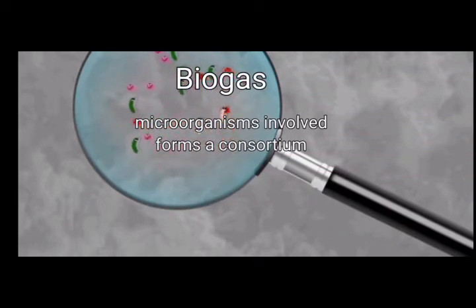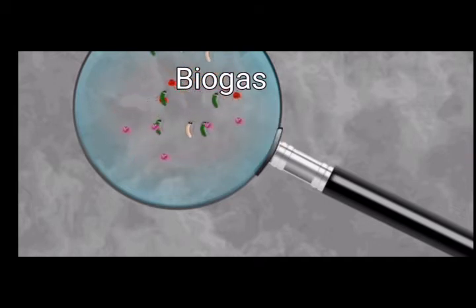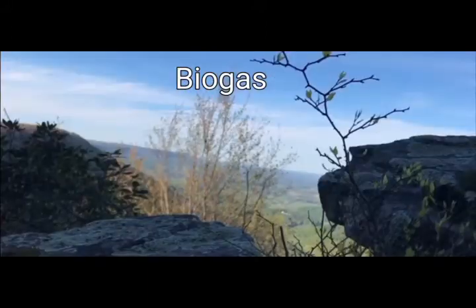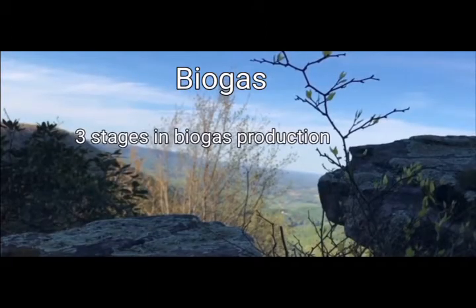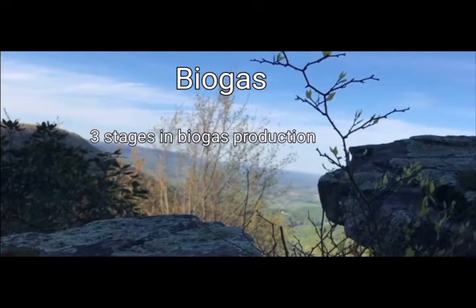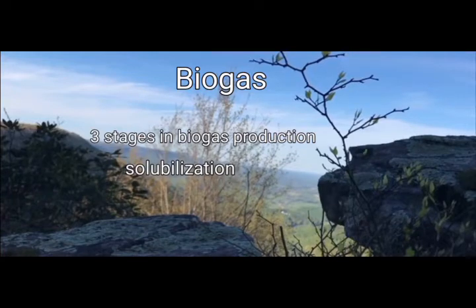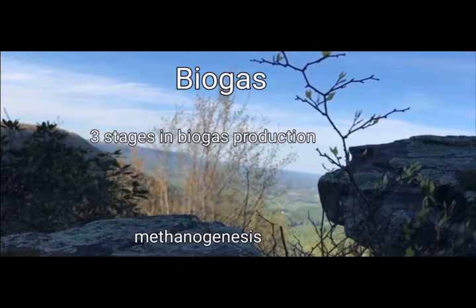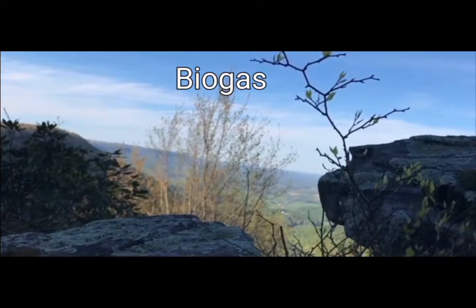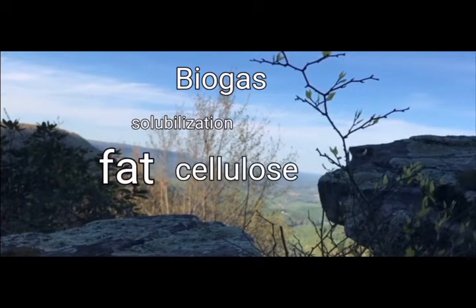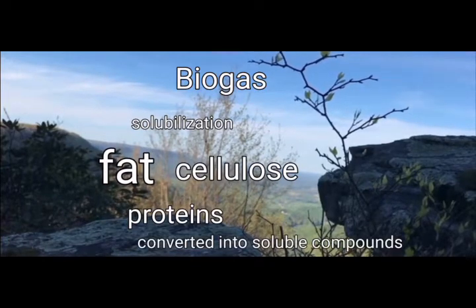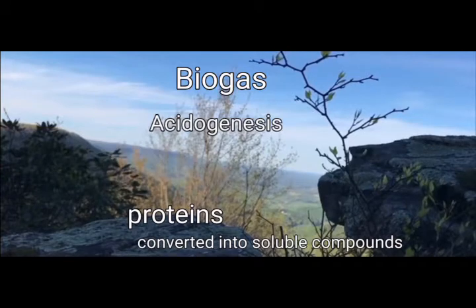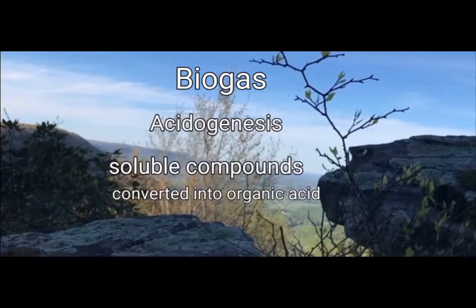The gas is used as fuel for cooking or lighting. Microorganisms involved in biogas production are a group of different species which form a consortium. Bacteria involved in the initial stages are not strictly anaerobic. There are basically three stages in biogas production: solubilization, acidogenesis, and methanogenesis.